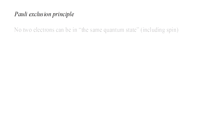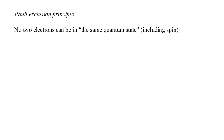So far we've stated the Pauli exclusion principle along the lines of 'no two electrons can be in the same quantum state.' But one of the postulates of quantum mechanics is that the state of a quantum system is specified by its wave function. So rigorously, the exclusion principle should be a statement about the wave function.